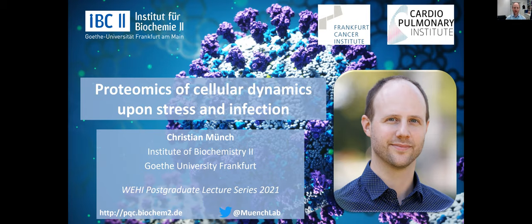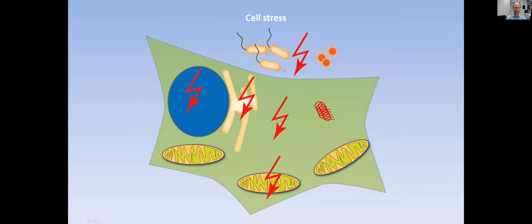So where is my lab coming from? What's the focus? What do we care about? This is generally summarized as cell stress. We care about different types of stresses in different cellular environments, and it can actually be extracellular. So things here include environmental factors, including infection with viruses or bacteria.